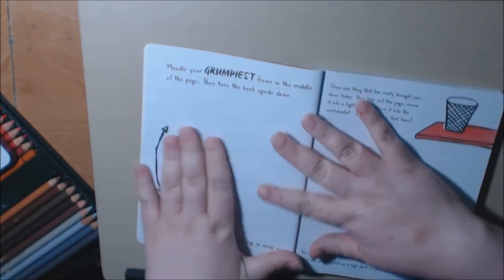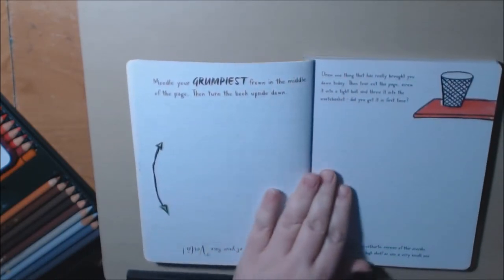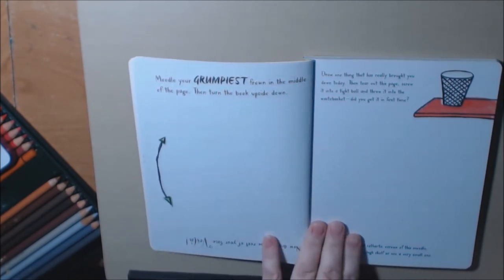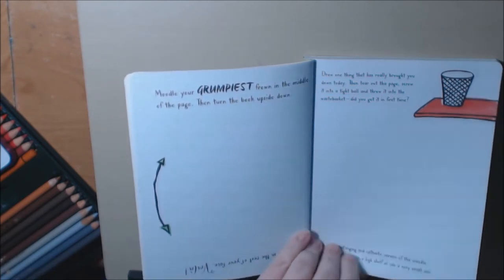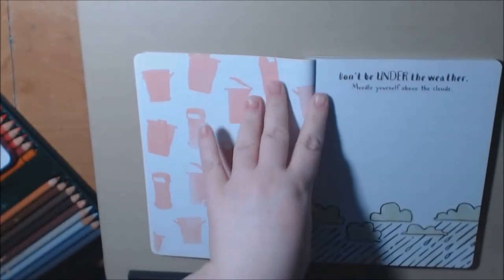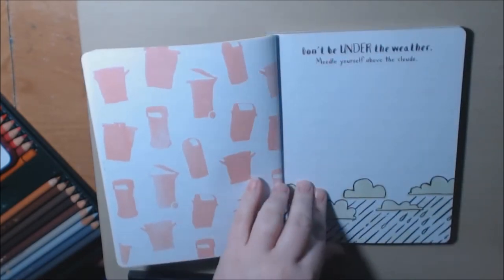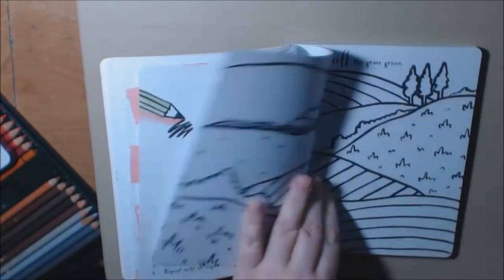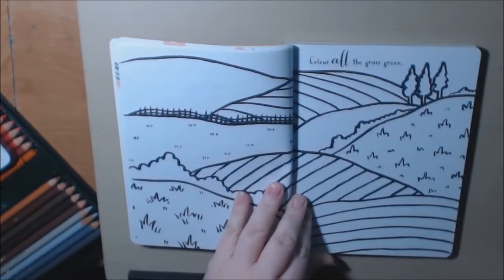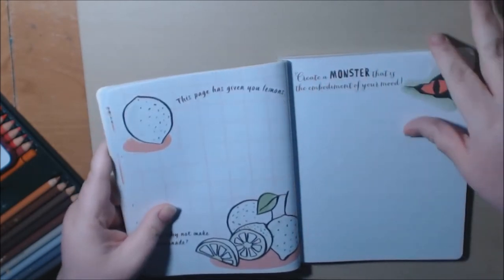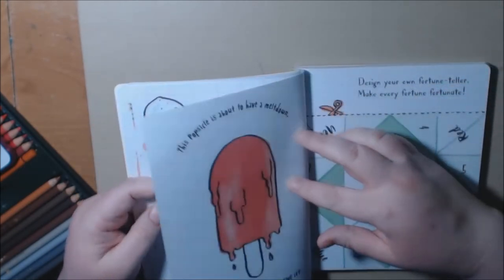And it's just different pages that give you prompts. You can doodle things in. You know, turn the page upside down. You can color in it. You can draw yourself here. Scribble your frustration. Color all the grass green. Create a monster of your mood.